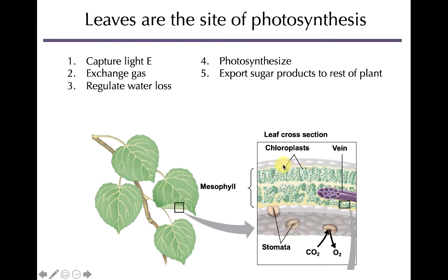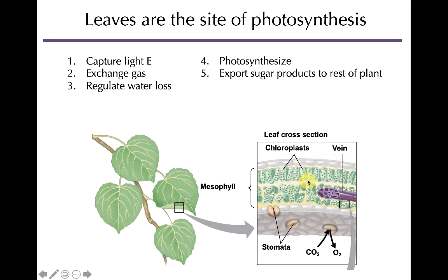In a cross-section of a leaf, you can see different features mapped to these functions. Capturing light is a surface area function, and photosystems in the chloroplasts do the work. Gas exchange — CO2 going in and O2 coming out — occurs through the stomata (stoma singular), which also regulate water loss by opening and closing. Photosynthesis happens in the chloroplast, and export of products to the rest of the plant occurs through the veins — the vasculature in the leaves.